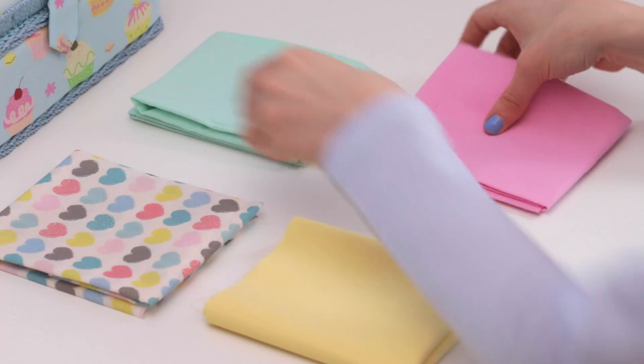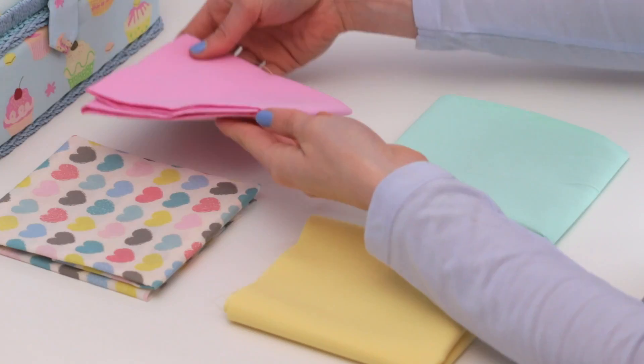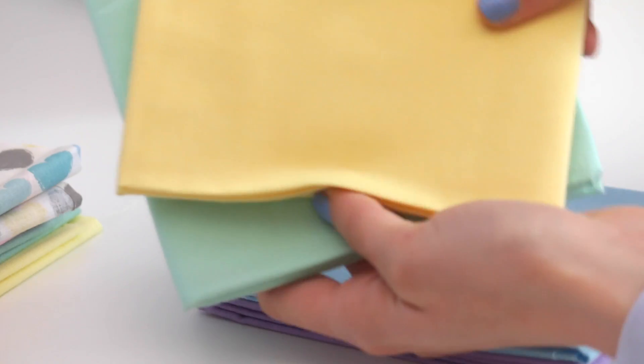I'm going to be using 4 colors. Heart fabric for the bottom accent, pink for the inside of the bag, and yellow and green for the outside.